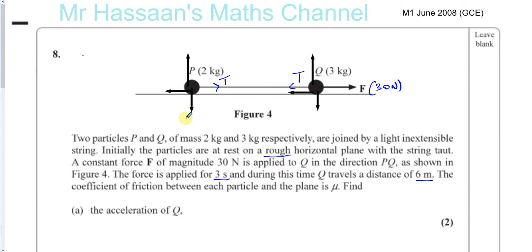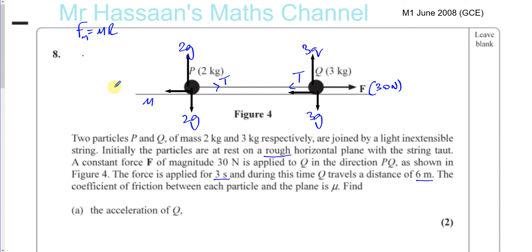The weight of P is 2G and its reaction force is also 2G. The weight of Q is 3G and its reaction force is 3G. The frictional force is mu times R. Since the particles are moving, we've reached maximum friction, so the frictional force equals mu R. For P that's mu times 2G, and for Q it's mu times 3G. Those are all the forces acting on these particles.